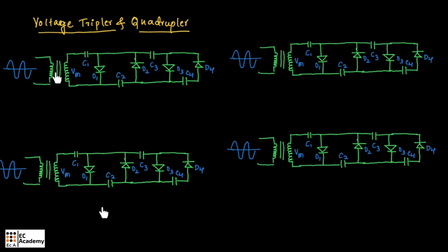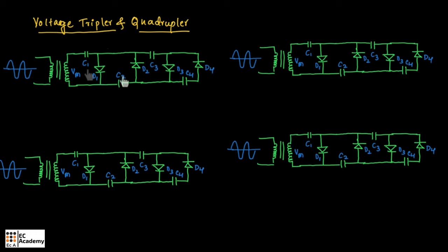Here we have connected a transformer and at the secondary of the transformer, the voltage is Vm. This voltage will act as input to the circuit. Here we have connected 4 diodes as well as 4 capacitors as shown in this figure, which are named as D1, D2, D3 and D4, and C1, C2, C3 and C4.